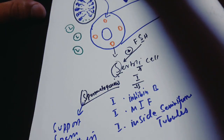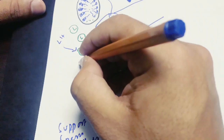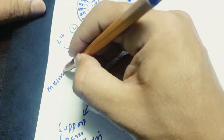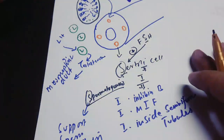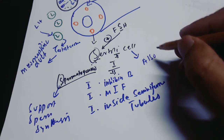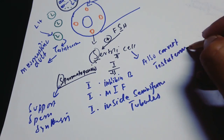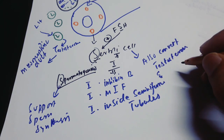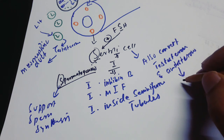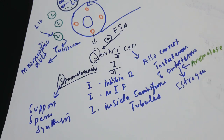LH acts on Leydig cells, which secrete testosterone, and testosterone helps form the male internal genitalia from the mesonephric (Wolffian) duct. Sertoli cells are analogous to granulosa cells in females; they convert testosterone and androgens to estrogen using the aromatase enzyme, which is also present in the granulosa cells of females.